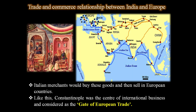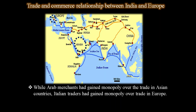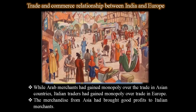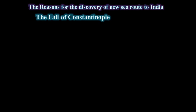Arab merchants gained a monopoly over trade in Asian countries because of their role as a link between Europe and Asian countries. On the other hand, Italian traders gained a monopoly over trade in Europe. So both Arabs and Italians held monopoly positions, and the merchandise from Asia brought good profits to Italian merchants.